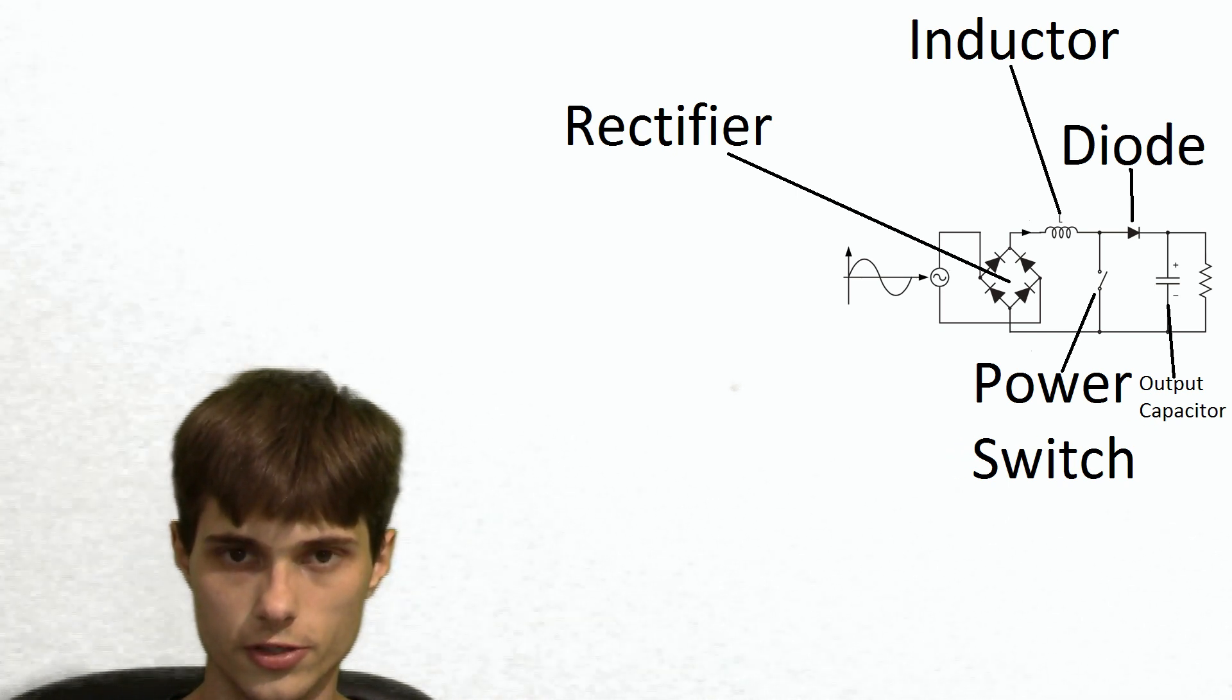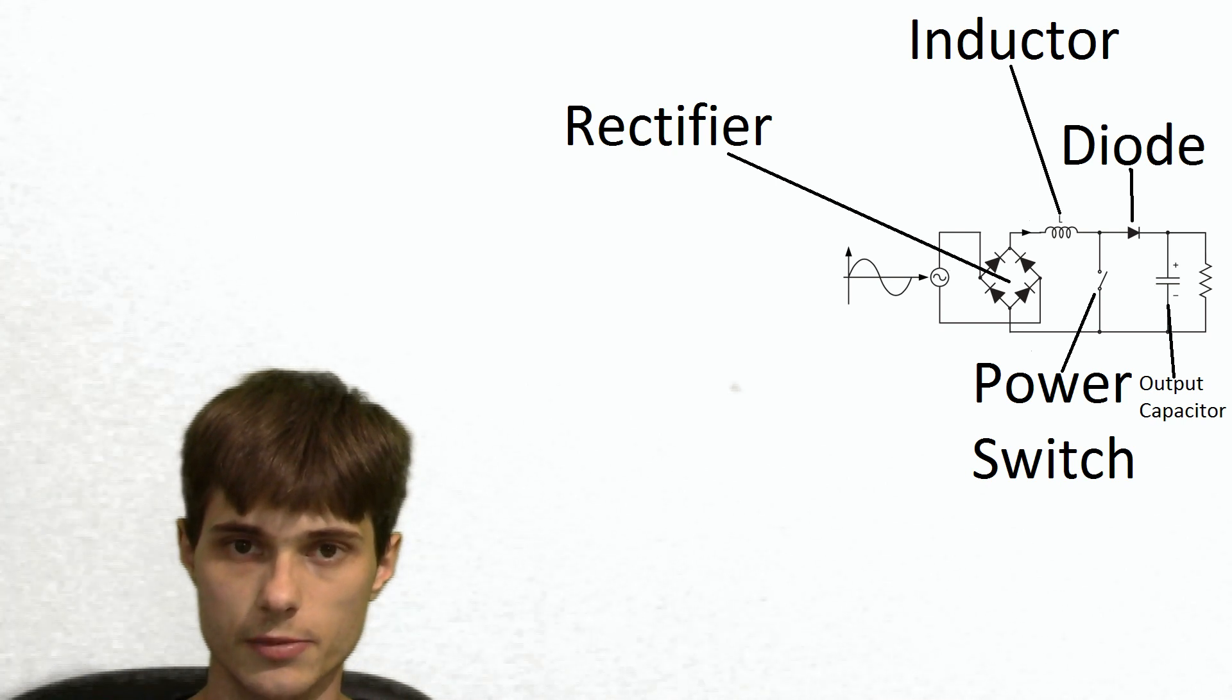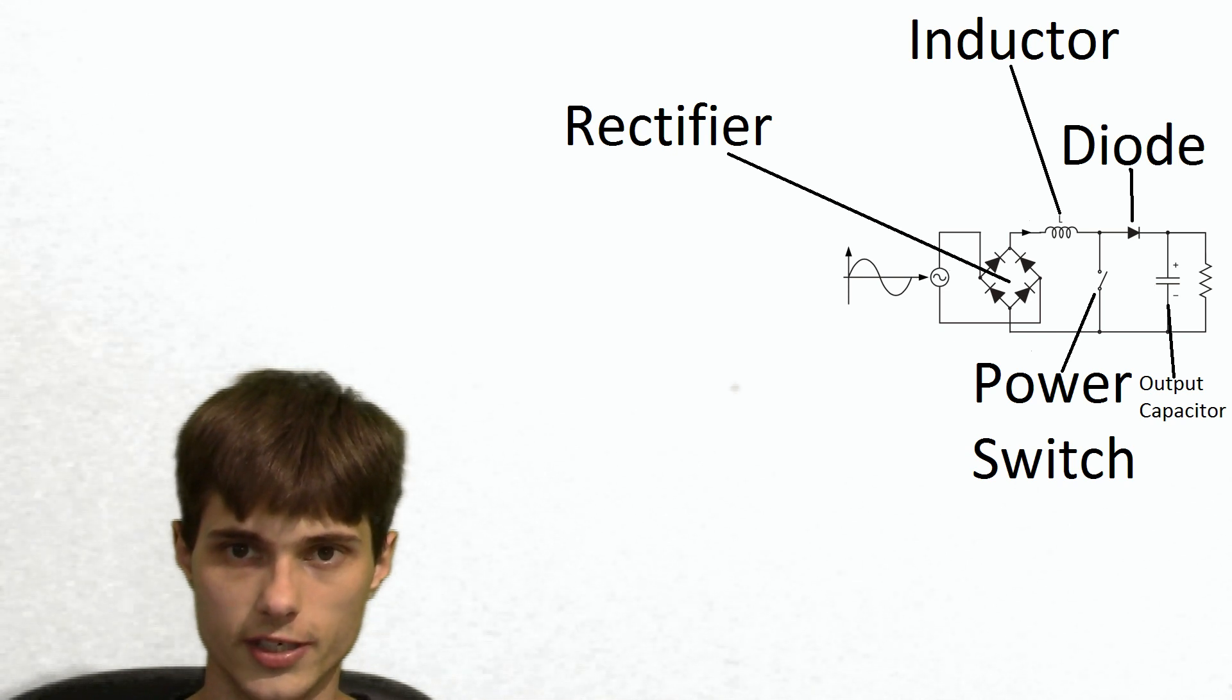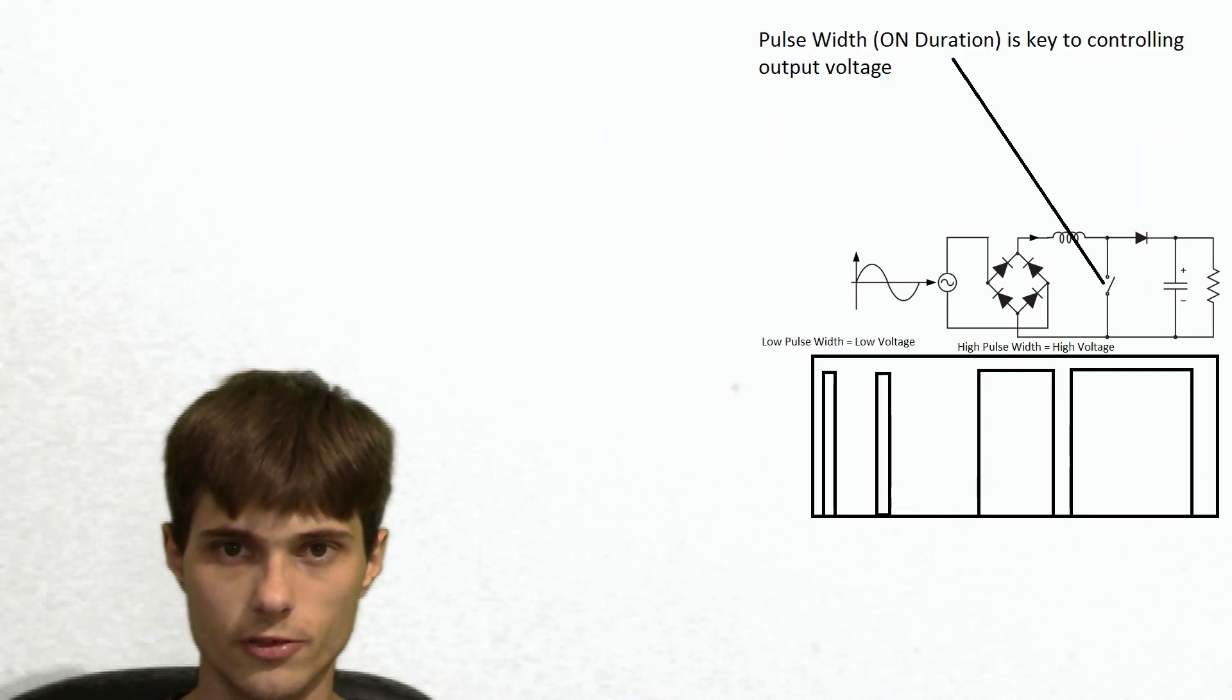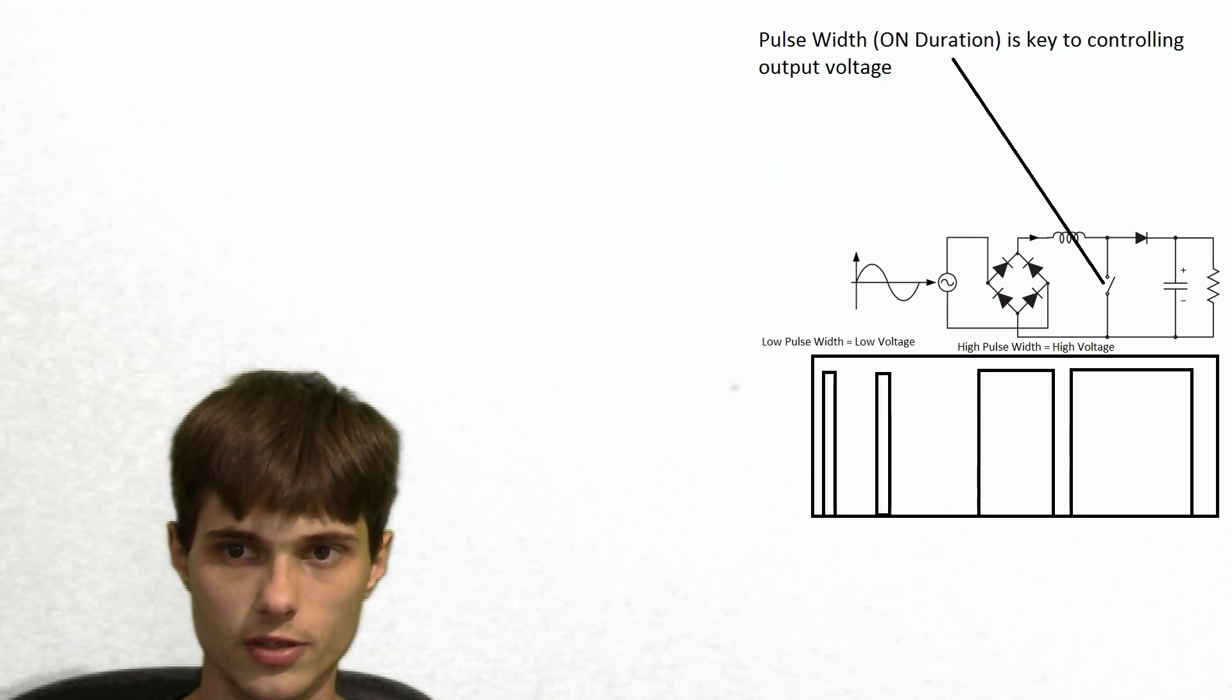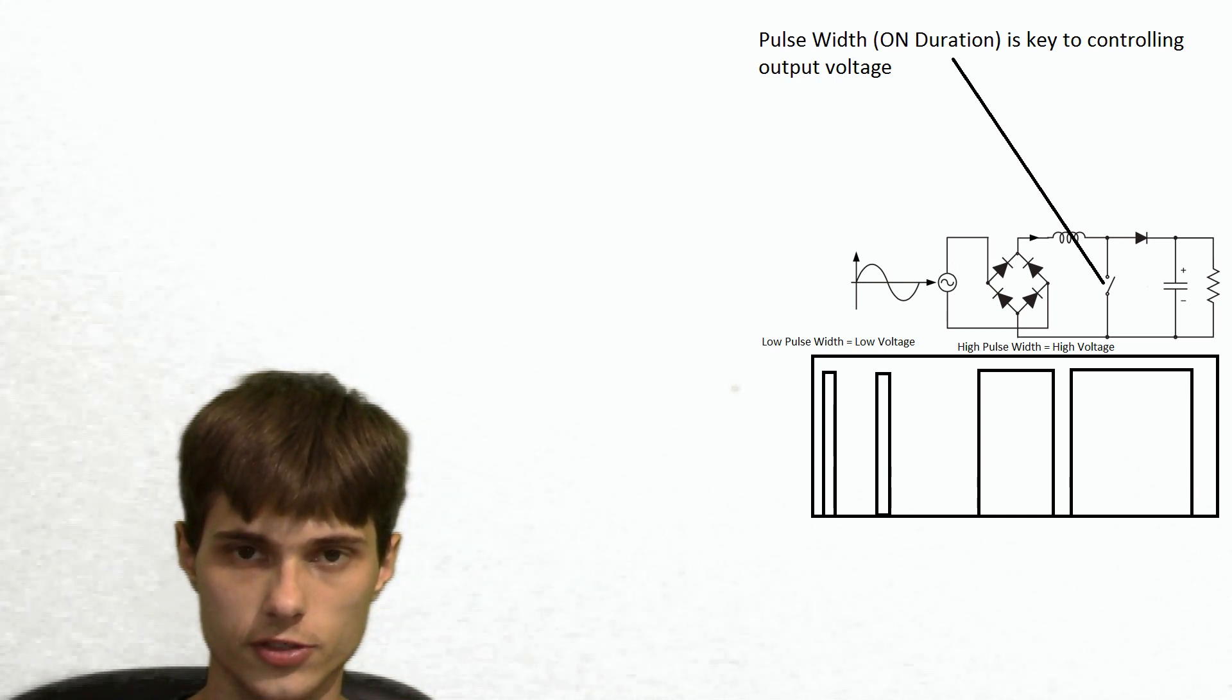But how do you control the output voltage? And this is key, because a power factor correction won't work unless we can precisely control the output voltage at all times. So the way the output voltage is determined, there's a lot of different factors that go into it, but primarily in this video we're going to be focused on the pulse width, or the duration, how long the transistor and the circuit stays on.